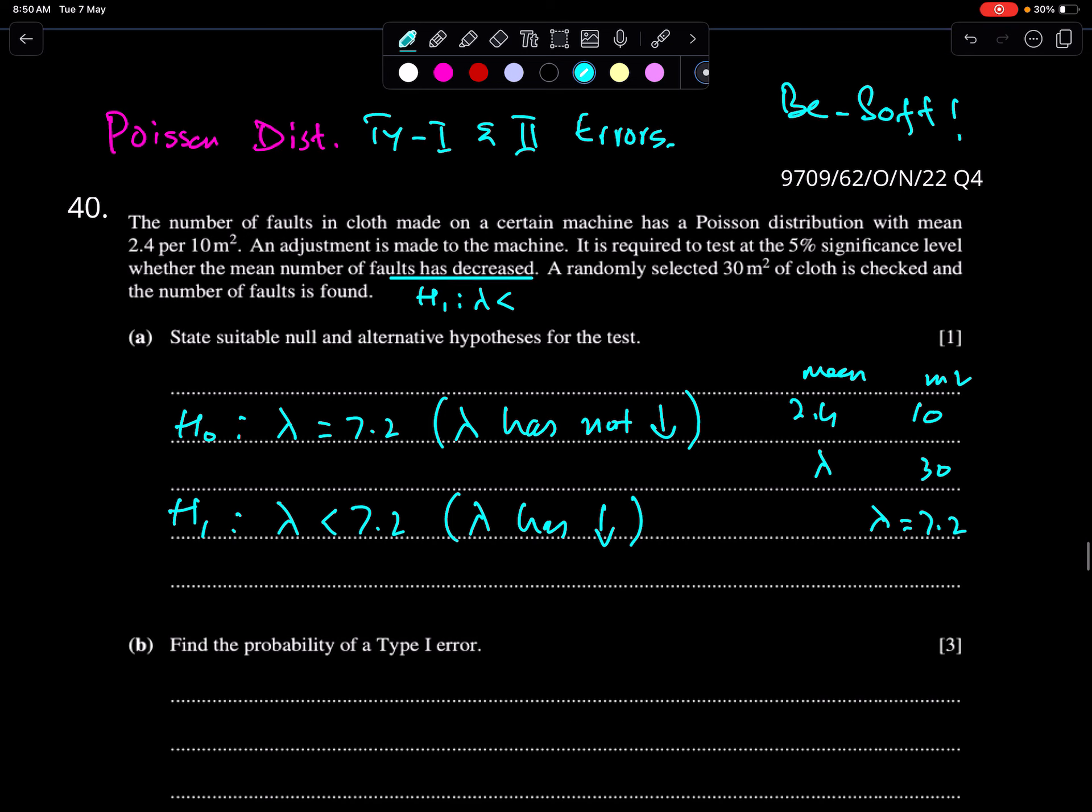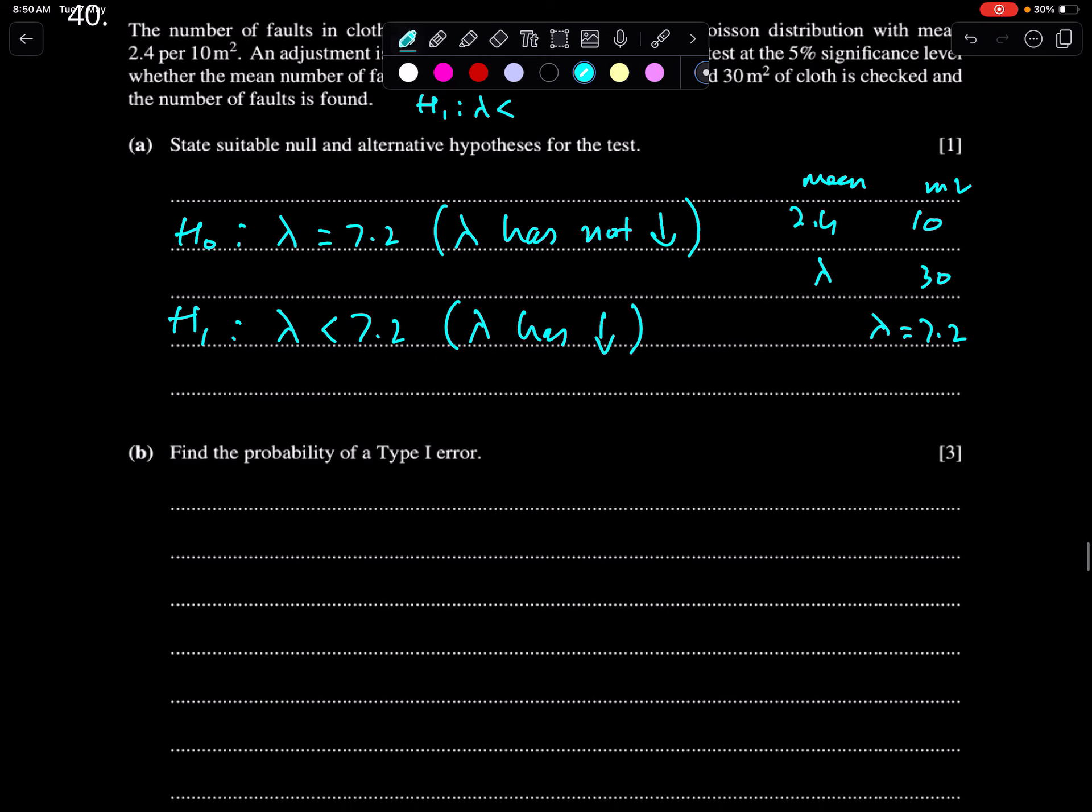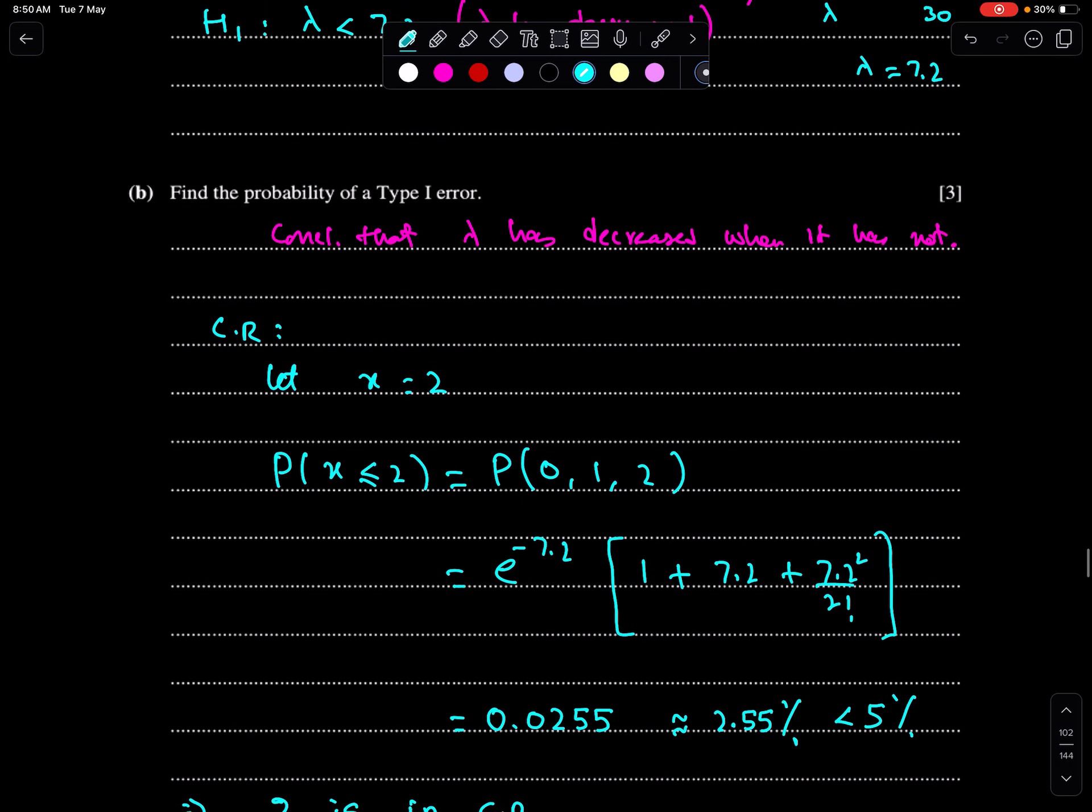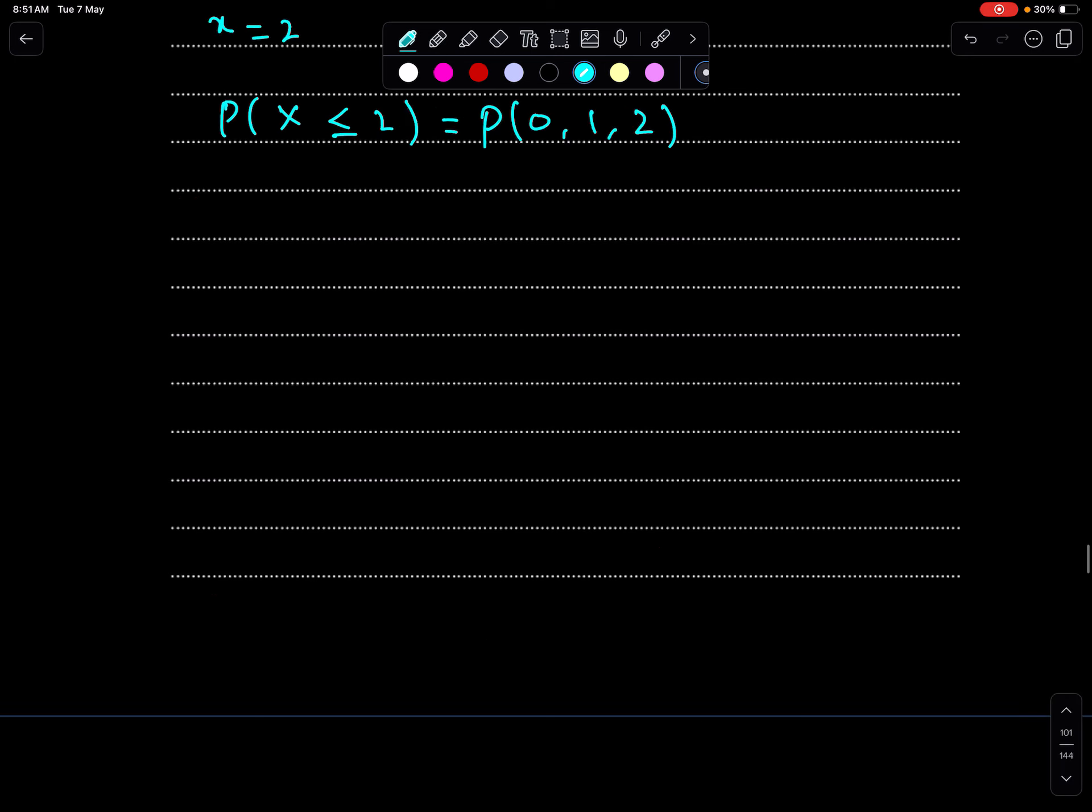Find the probability of a type 1 error. This is very simple. Probability of type 1 error is the probability of critical region. So you have to use trial and error method. Now you have options. You can try with 1 or 2, because 0 is always in critical region. This is the first value. So let's try with 1. X1 or 2. So probability X less than equal to 2, because it's a lower tail test. So you have to find this probability and compare it with alpha percent. In order to save time, I'm just checking the results. So X less than equal to 2 is 2.55%, which is less than 5%.